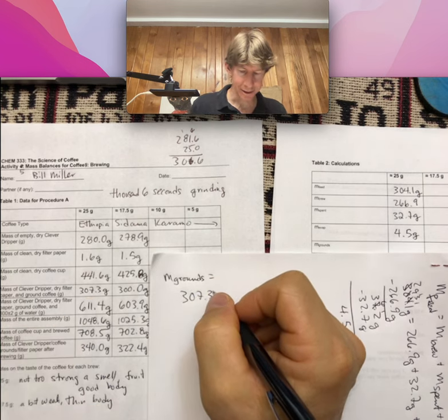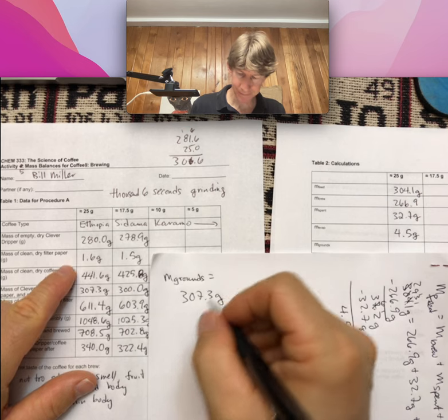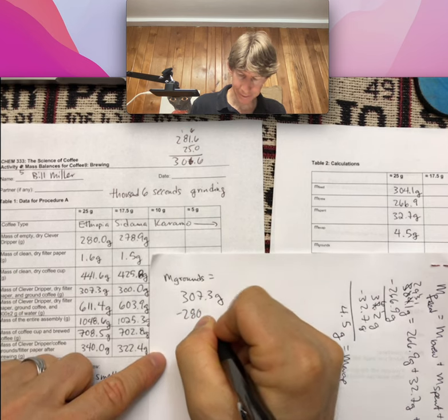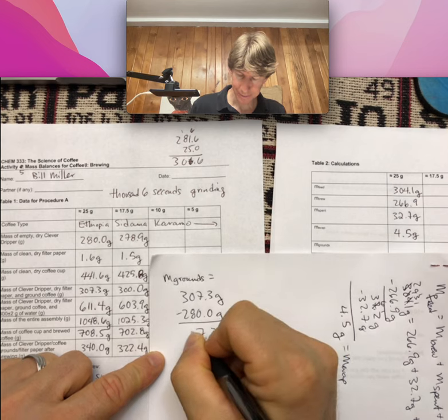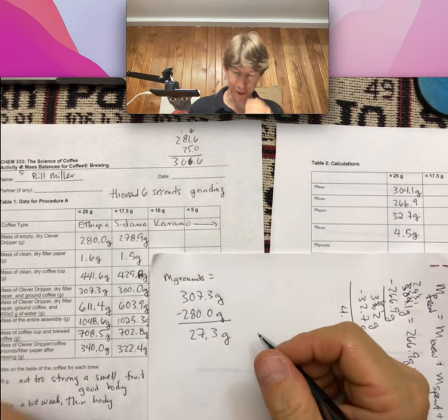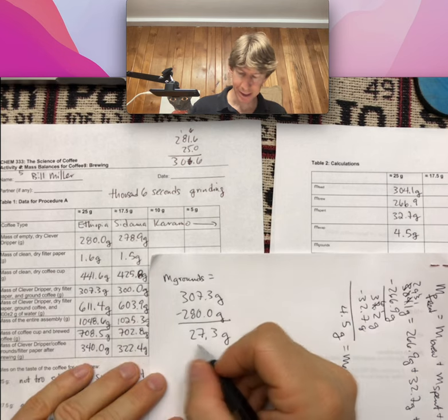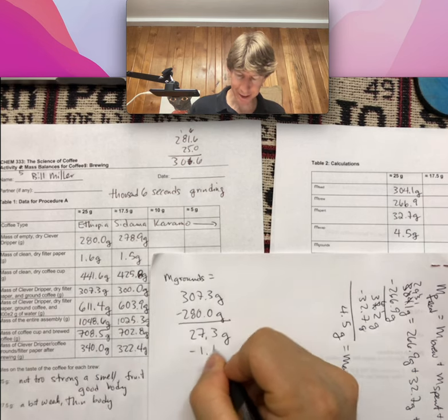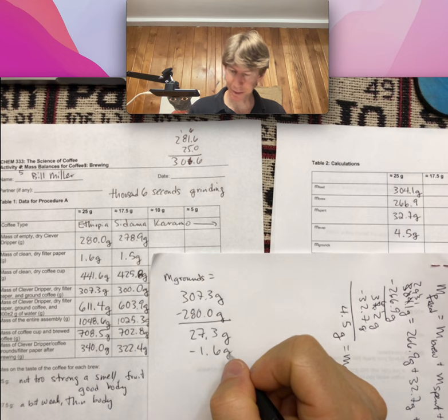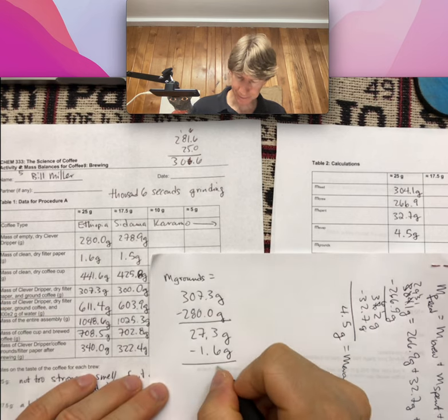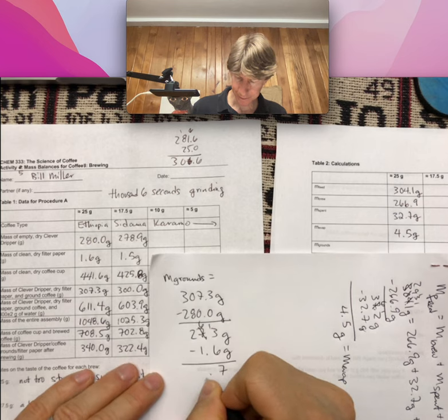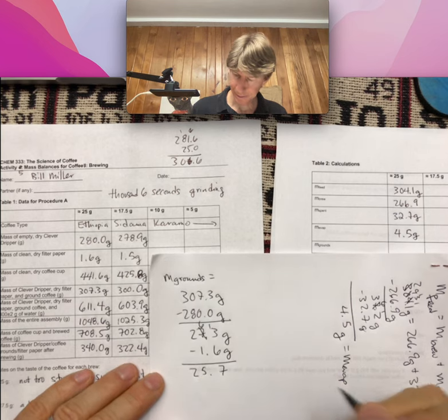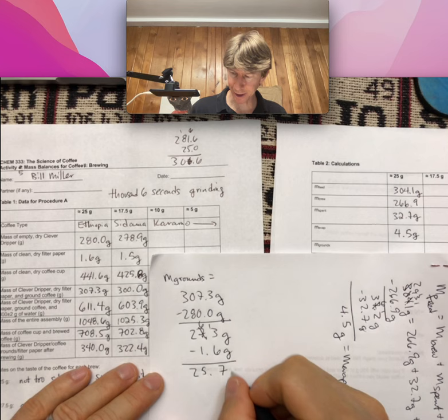Minus mass of clever dripper. So I ended up with 27.3 grams. Minus 1.6 grams for my dry filter paper.